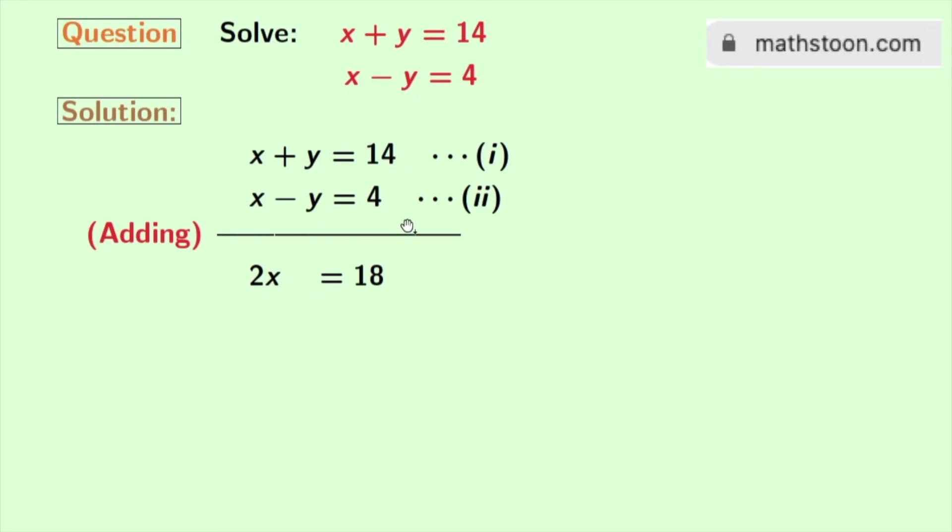And 14 plus 4 is 18. So finally, we have 2x is equal to 18.